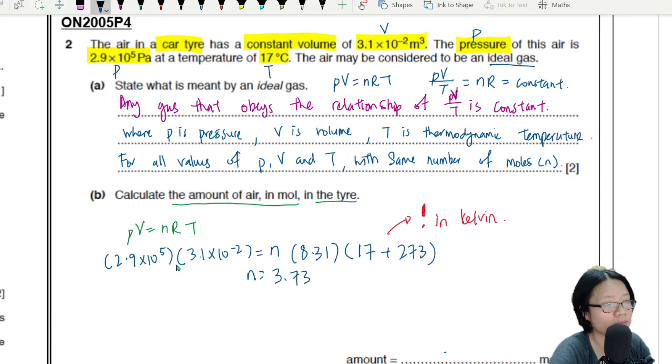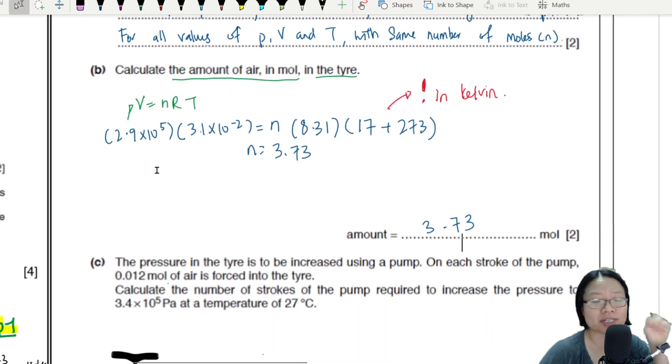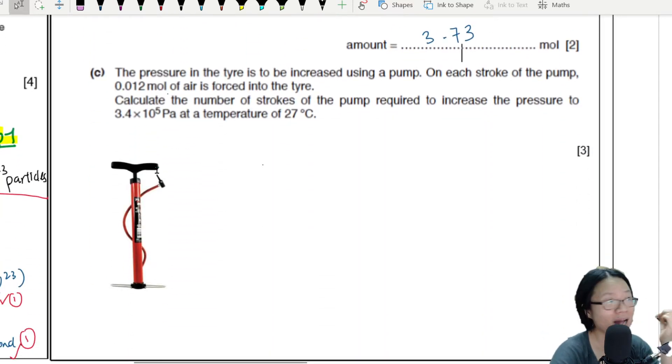Okay, so I've pressed my calculator and I've gotten 3.73, so hopefully you get the same number as well. Can write your answer in 2 to 3 significant figures for now. Okay, no problem. Let's move on to part C because the question is not over yet.